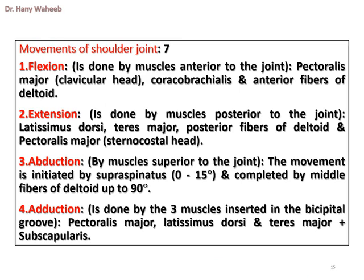Movements of the shoulder joint — seven movements. 1. Flexion: by muscles anterior to the joint — pectoralis major (clavicular head), coracobrachialis, and anterior fibers of deltoid. 2. Extension: by muscles posterior to the joint — latissimus dorsi, teres major, posterior fibers of deltoid, and pectoralis major (sternocostal head). 3. Abduction: the movement is initiated by supraspinatus (0–15 degrees) and completed by the middle fibers of deltoid up to 90 degrees.